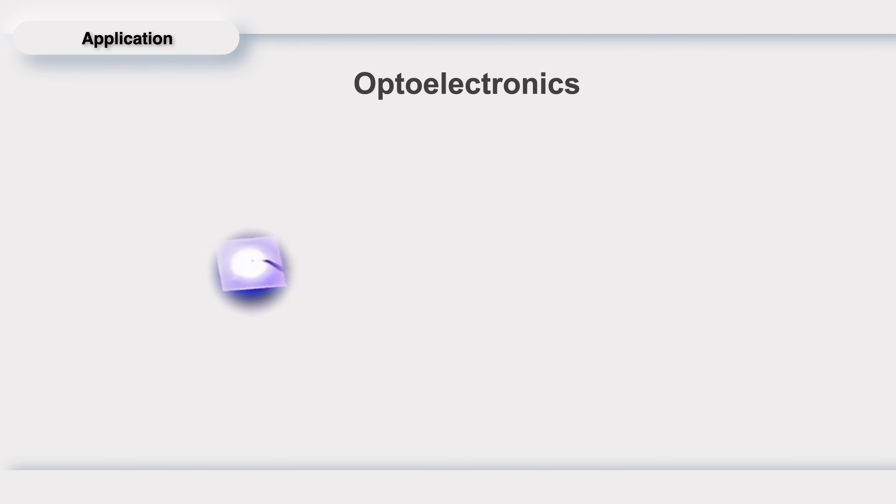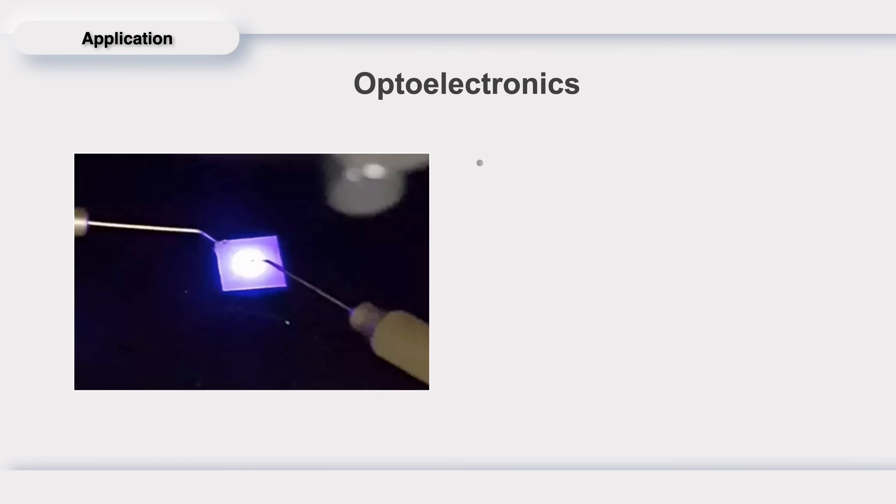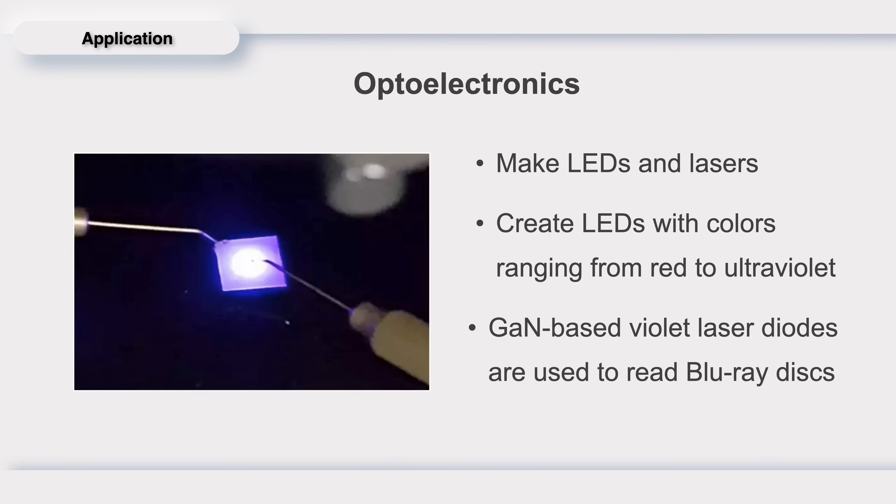In the field of optoelectronics, GAN is used to make LEDs and lasers. GAN can be mixed with indium or aluminate to create LEDs with color ranging from red to ultraviolet. And GAN-based violet laser diodes are used to read Blu-ray discs.